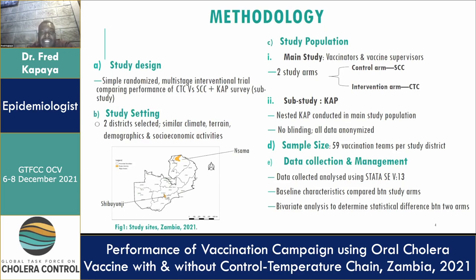The study population in the main study focused on vaccinators and vaccine supervisors, divided into two study arms: the control arm using the standard cold chain, and the intervention arm using CTC. The sub-study was a nested CAP survey. No blinding was done and data was anonymized. We selected 59 vaccination teams per district. Data was collected and analyzed using Stata version 14. Baseline characteristics were compared between study arms, and bivariate analysis was done to determine statistical significance.